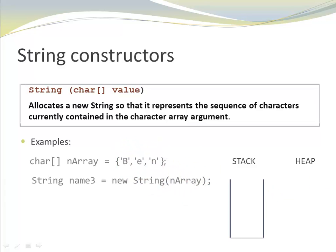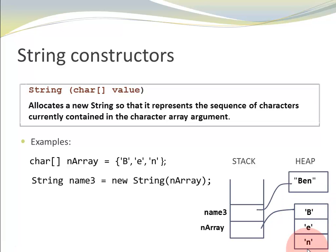This is how it looks in memory. My n array is an array, so it points to an array on the heap. And now, we create a variable name 3 and based on the element values, a new String object is created. In this case, ben.